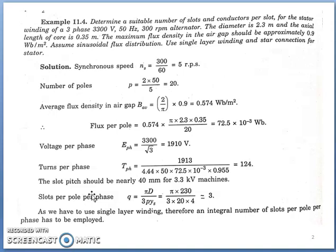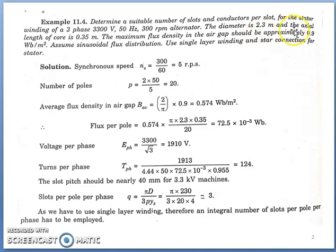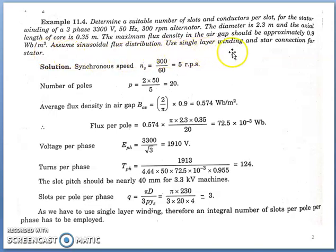Consider this example: Determine a suitable number of slots and conductors per slot for the stator winding of a three-phase, 3300 volt, 50 Hz, 300 RPM alternator. The diameter is 2.3 meter and the axial length of the core is 0.35 meter. The maximum flux density in the air gap should be approximately 0.9 Weber per meter square. Assume sinusoidal flux distribution, use single layer winding and star connection for the stator.